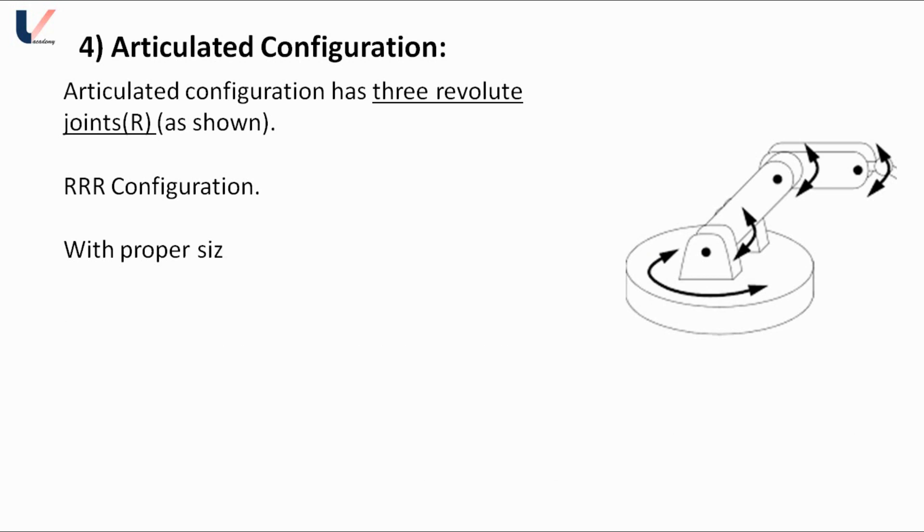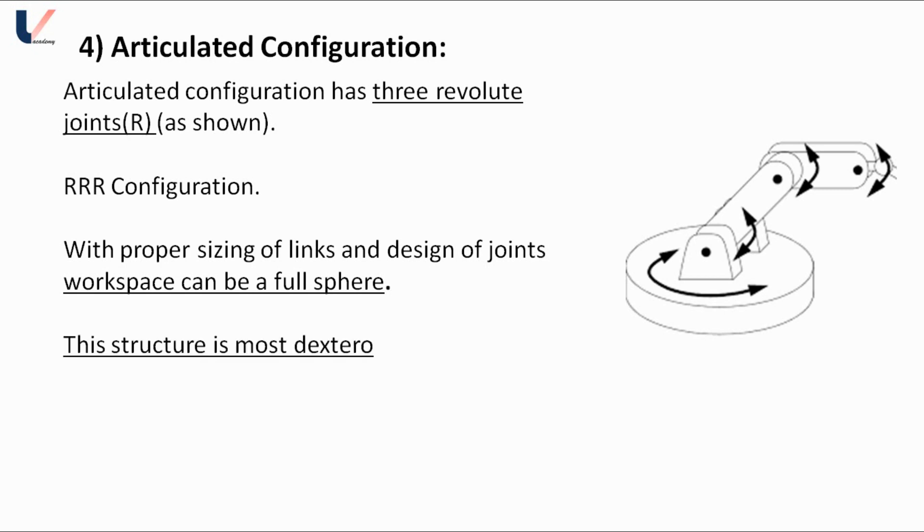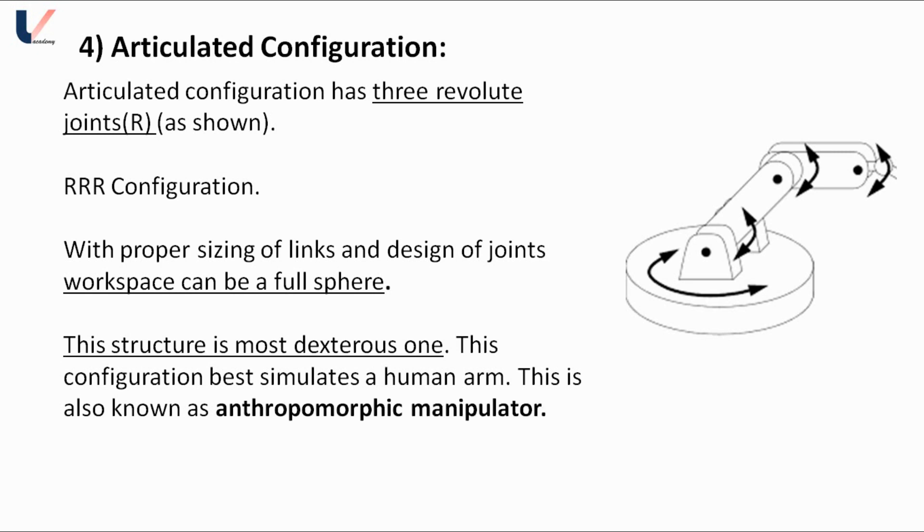With proper sizing of links and design of joints, the workspace can be a full sphere in articulated configuration. This structure is the most dexterous one. This configuration simulates the human arm, thus this configuration is also known as anthropomorphic manipulator. Positional accuracy varies with arm endpoint location in workspace.